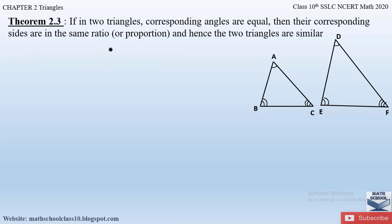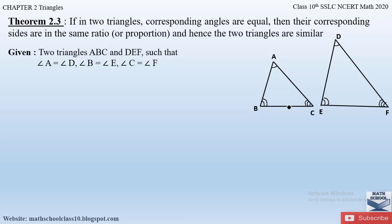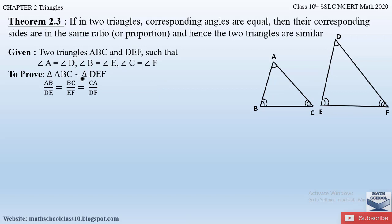Let us write down what is given and what we have to prove. Given: triangles ABC and DEF such that angle A = angle D, angle B = angle E, and angle C = angle F. To prove: triangle ABC is similar to triangle DEF, by showing AB/DE = BC/EF = AC/DF.